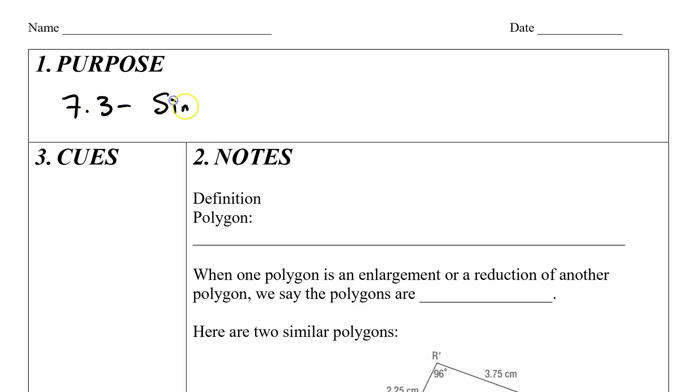7.3 similar polygons. Don't forget the date, don't forget your name, minus Tara.